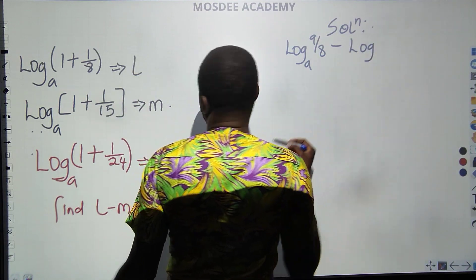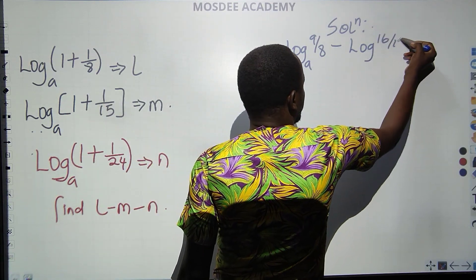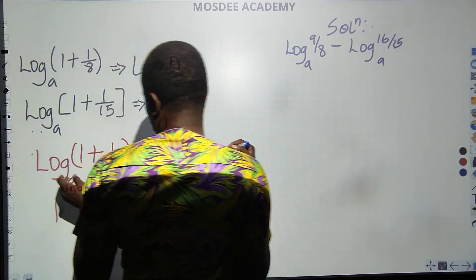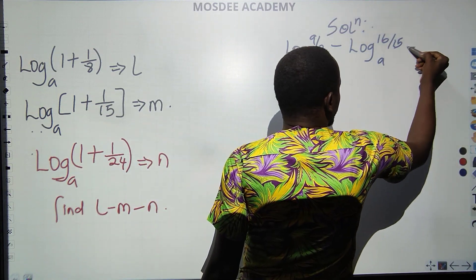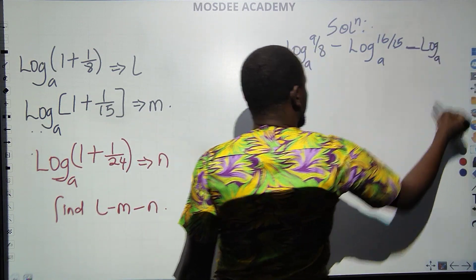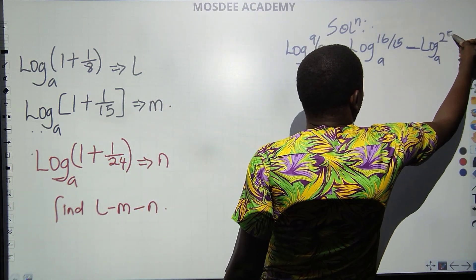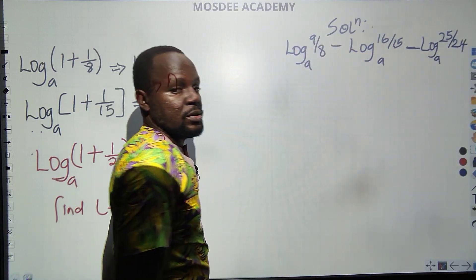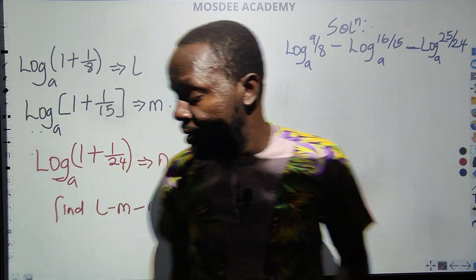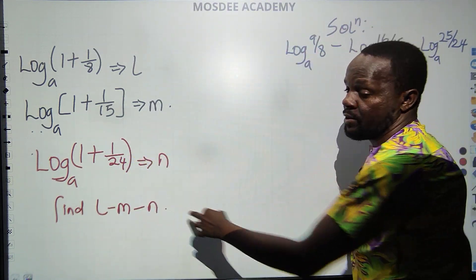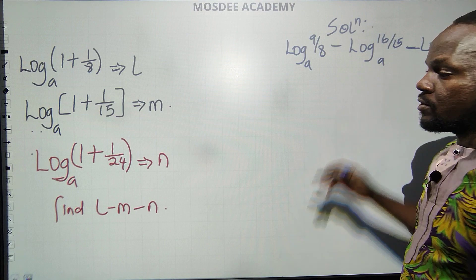Log, the base is A. The second one, 1 plus 1 by 15 is 16 over 15. Then the last one is 1 plus 1 over 24 is 25 over 24, and minus log to base A. As it is 25 over 24. As I've said, this is a basic question that everybody should be able to understand. So L is the first one, M is the second one, and N is the third one.